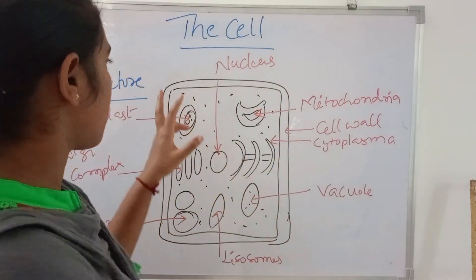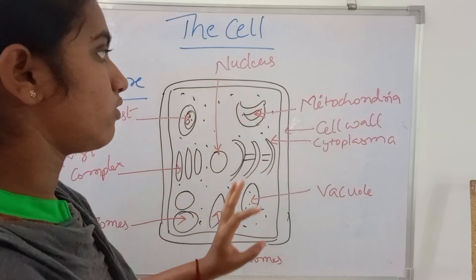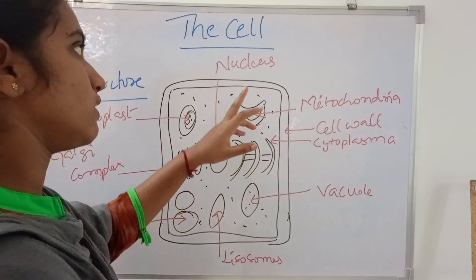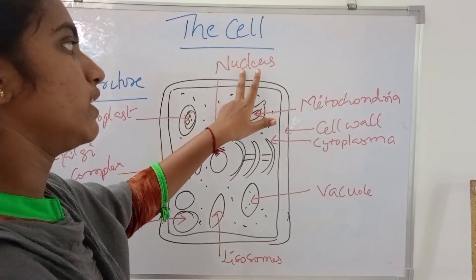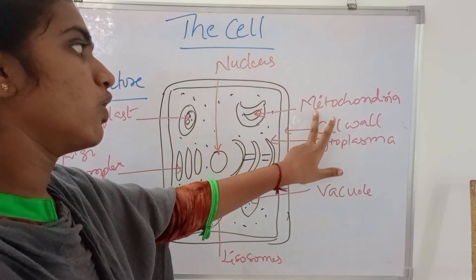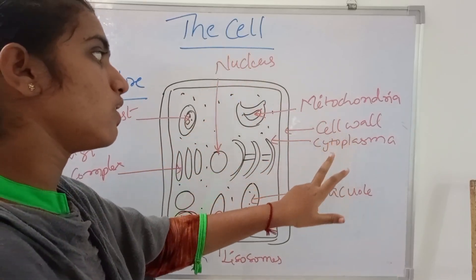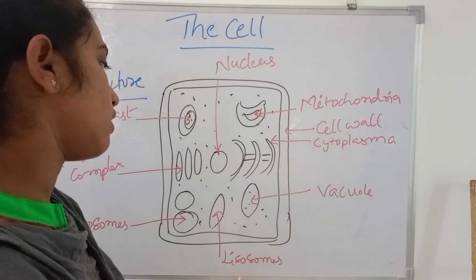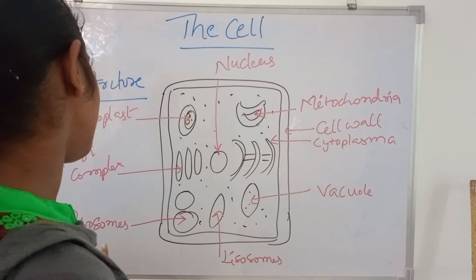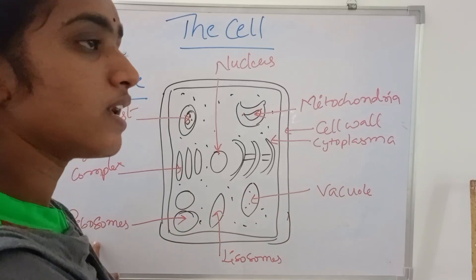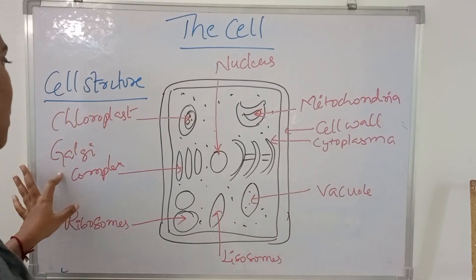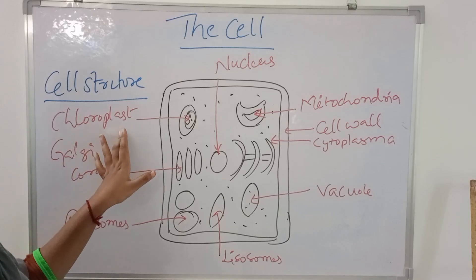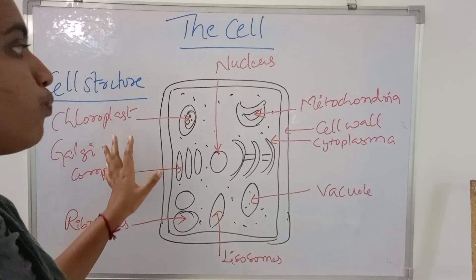The structure of cells includes: nucleus, mitochondria, cell wall, cytoplasm, vacuole, lysosomes, ribosomes, Golgi complex, and chloroplast.